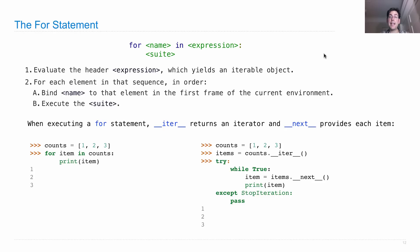So this is equivalent to saying counts one, two, three, and then items is what we get when we invoke iter on counts. And then we'll try to do the following until we raise some exception.